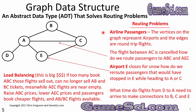The classic routing problem is airline passengers. Vertices represent airports and edges are round-trip flights. If the flight between A and C is canceled, how do we route passengers via A, B, C or A, E, C? If Airport E closes for snow, how do we reroute passengers who were stopping in E on the way to A or C? What time do flights from D to A need to arrive to make connections to B, C, and E?